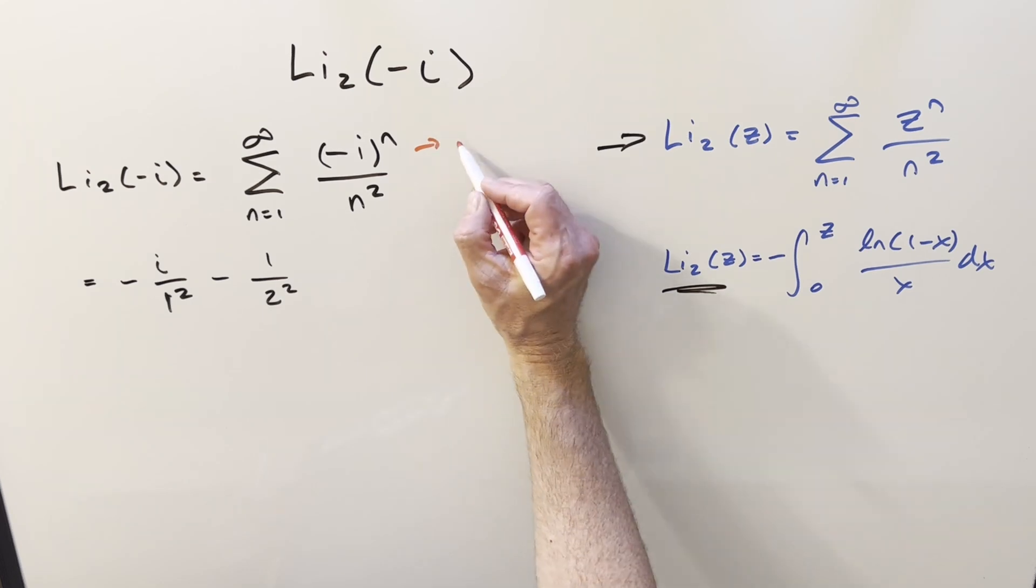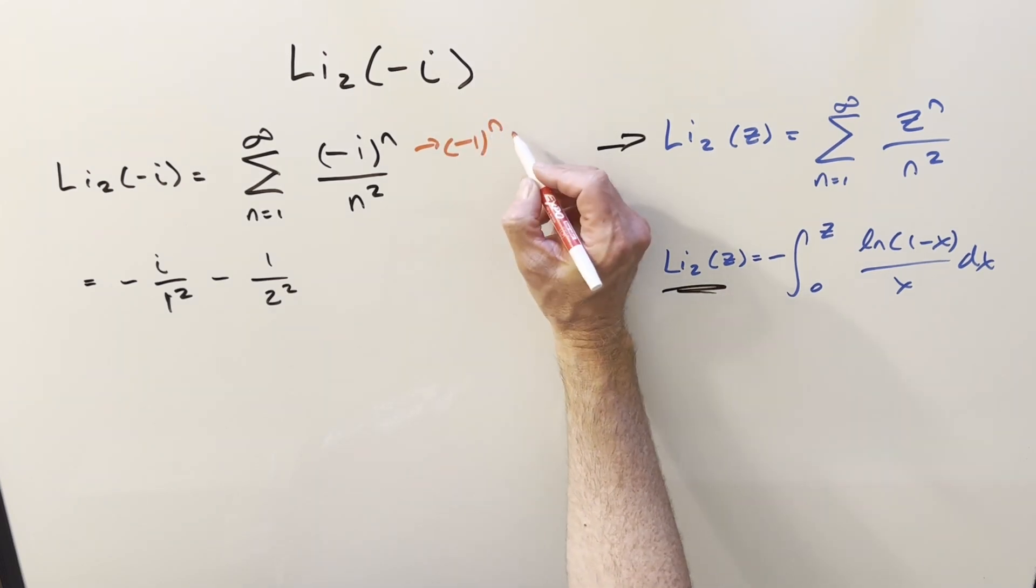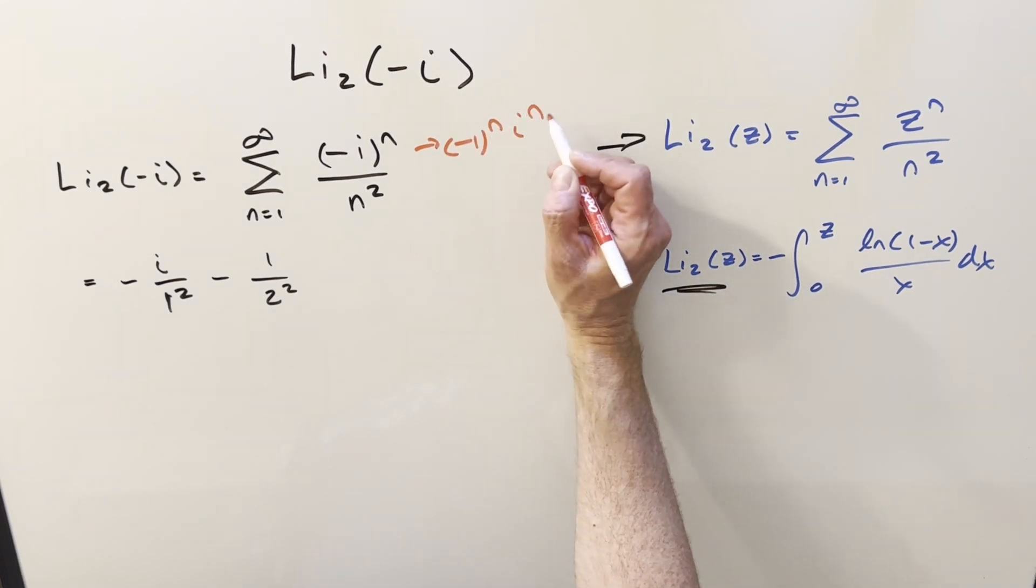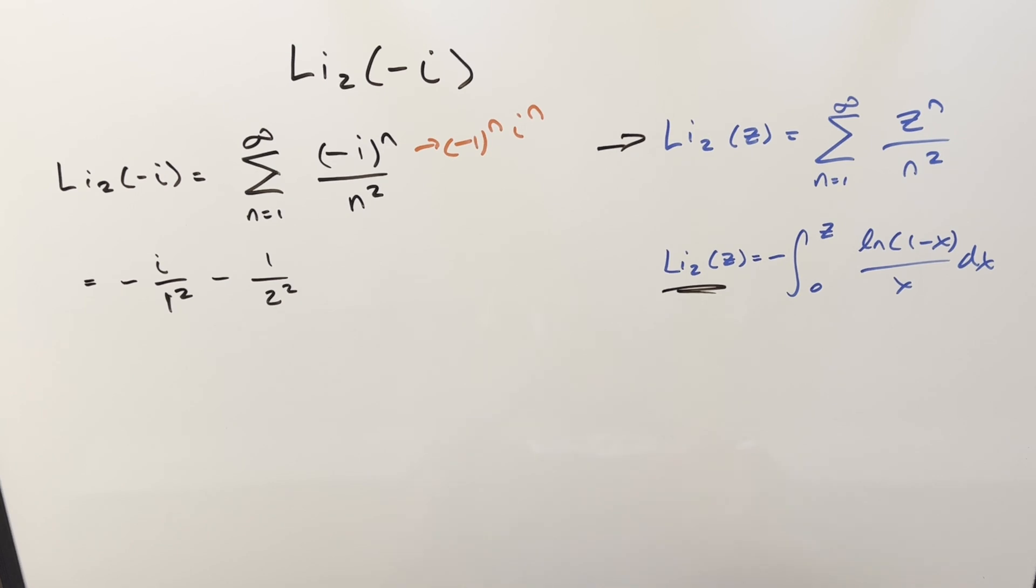It could be easier to break this up. You could write this as minus 1 to the n times i to the n, because usually you memorize your powers of i. So for i to the 1, of course, that's i. For i squared, it's negative 1. For i cubed, it's minus i. And for i to the 4th, you just get 1. And then of course, this is just going to repeat over and over again.